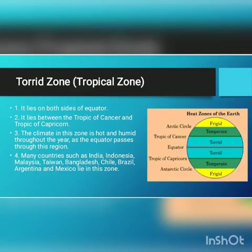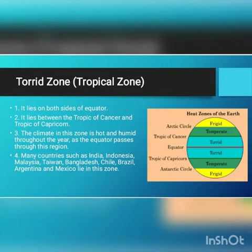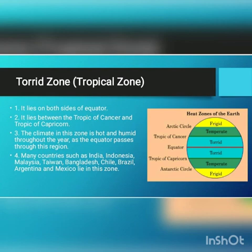Let us start with the torrid zone, or the tropical zone. The meaning of torrid is very hot and dry, so it is called the torrid zone. This zone lies on both sides of the equator, between the Tropic of Cancer and the Tropic of Capricorn. It is also called the tropical zone as it lies between both the tropics. The climate of this zone is very hot and humid as this zone gets direct sunlight.